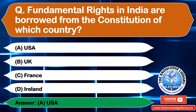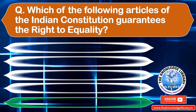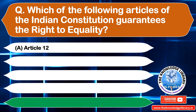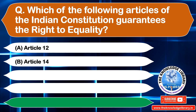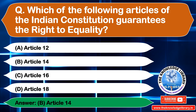The next question is: which of the following articles of the Indian Constitution guarantees the right to equality? Option A: Article 12, Option B: Article 14, Option C: Article 16, Option D: Article 18. The correct answer is Option B: Article 14.